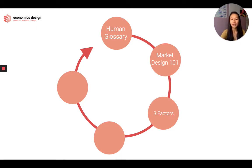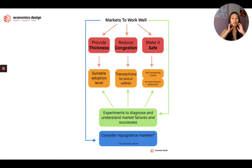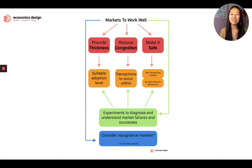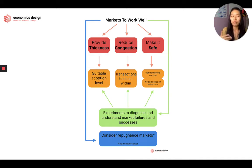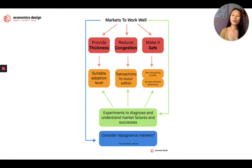Now we want to look at the three different factors affecting market design. For markets to work well, it needs three things. The first is to provide thickness — to make sure there's enough people in the ecosystem, enough options available, so that we can reach a suitable adoption level: your minimum viable market size, your minimum viable adoption level.